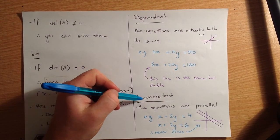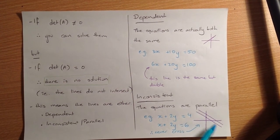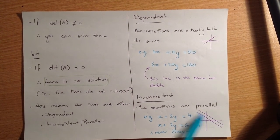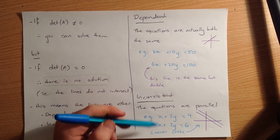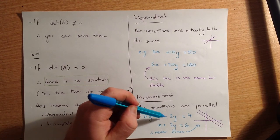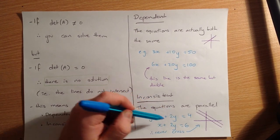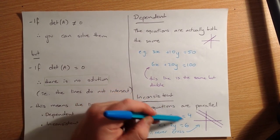Similarly, if the two lines are parallel, I've drawn two parallel lines here, they're never going to cross. They're never getting any closer or any further away from each other. And we know that because the gradients are the same. So you might not be able to tell the gradients are the same in these two simultaneous equations.